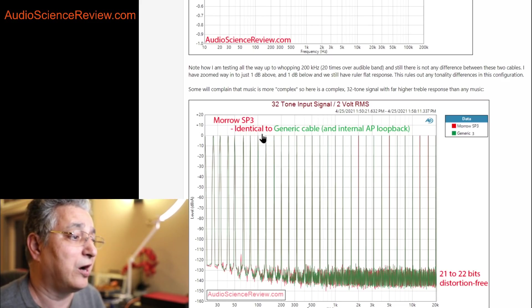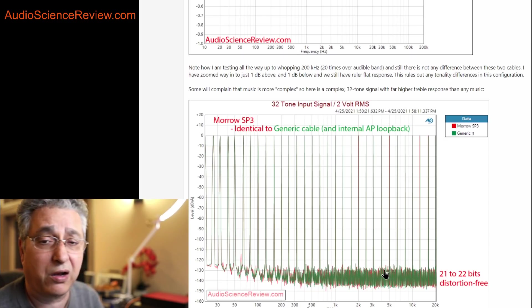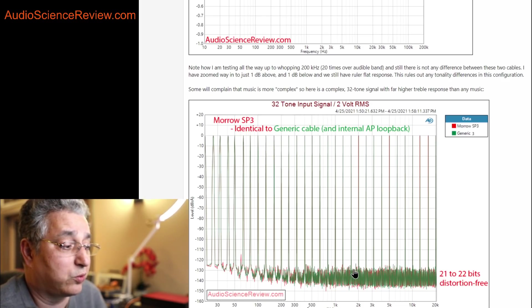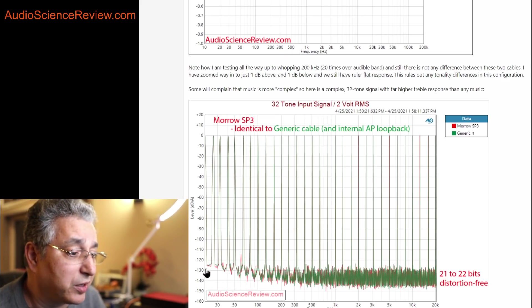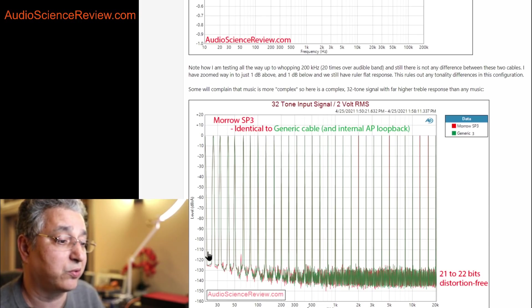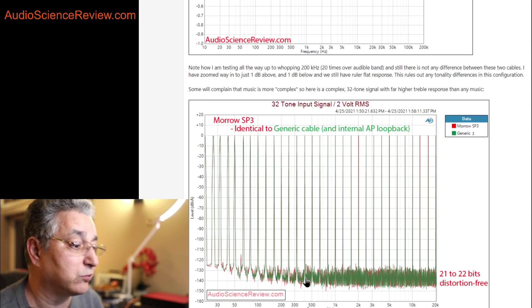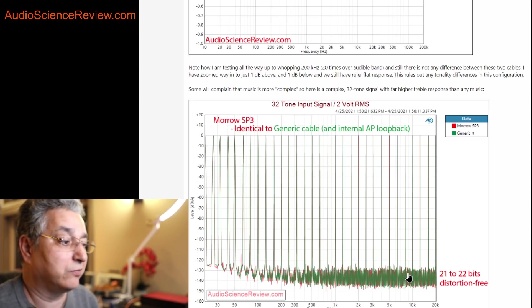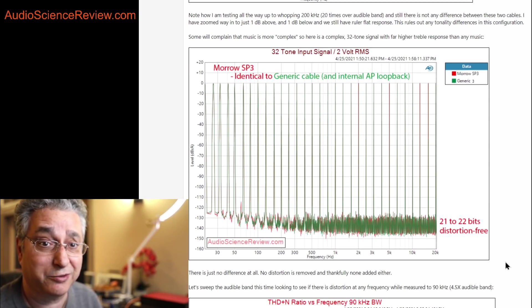It's certainly a lot more complex compared to music because its tones in high frequency are full amplitude, whereas typical music, this would drop like a rock over here. So we're stressing the cable and the systems a lot more. So I went ahead and tested the generic cable, the Morrow SP3, and the analyzer itself. In all three cases, the distortion and noise are identical. They all land on top of each other, and the colors actually mix in. You can't see it. Our distortion is down at 21 to 22 bits. It's about minus 125 to minus 130.